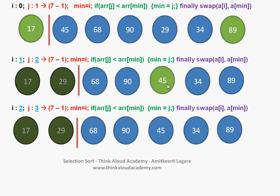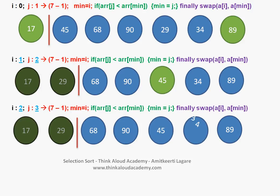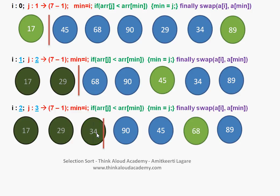When i becomes 2, we repeat the whole process again. 68 is compared and 45 happens to be smaller, then 34 happens to be the smallest. Finally we swap the third element with 34, so 34 goes in its place and is sorted. This continues until j reaches 6, and by the end of this process we have sorted all the elements in increasing order.